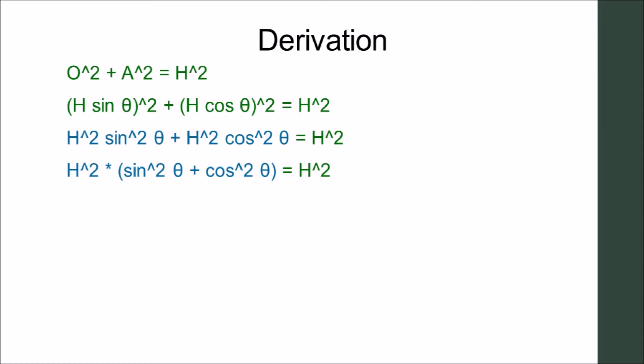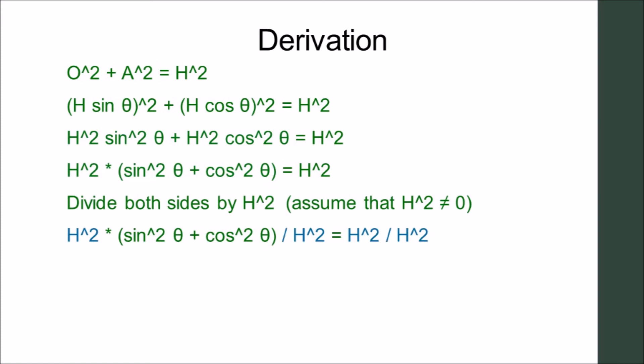We can factor out H², and then we get H² times the quantity sin²θ + cos²θ equals H². We assume that H is not equal to 0.